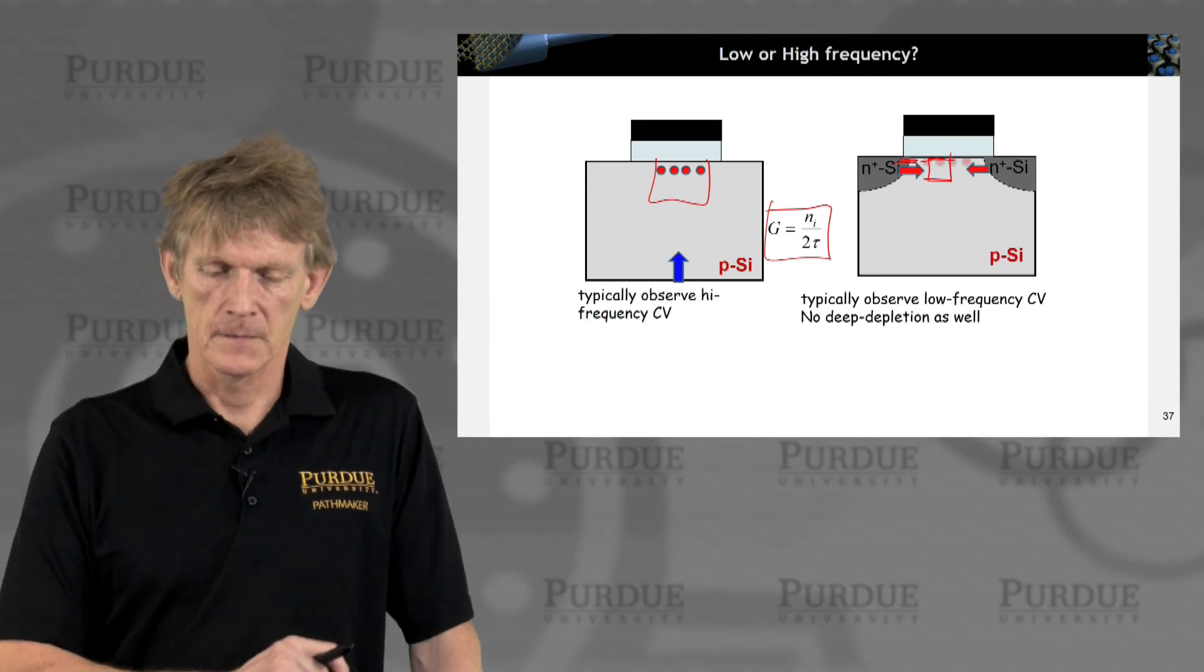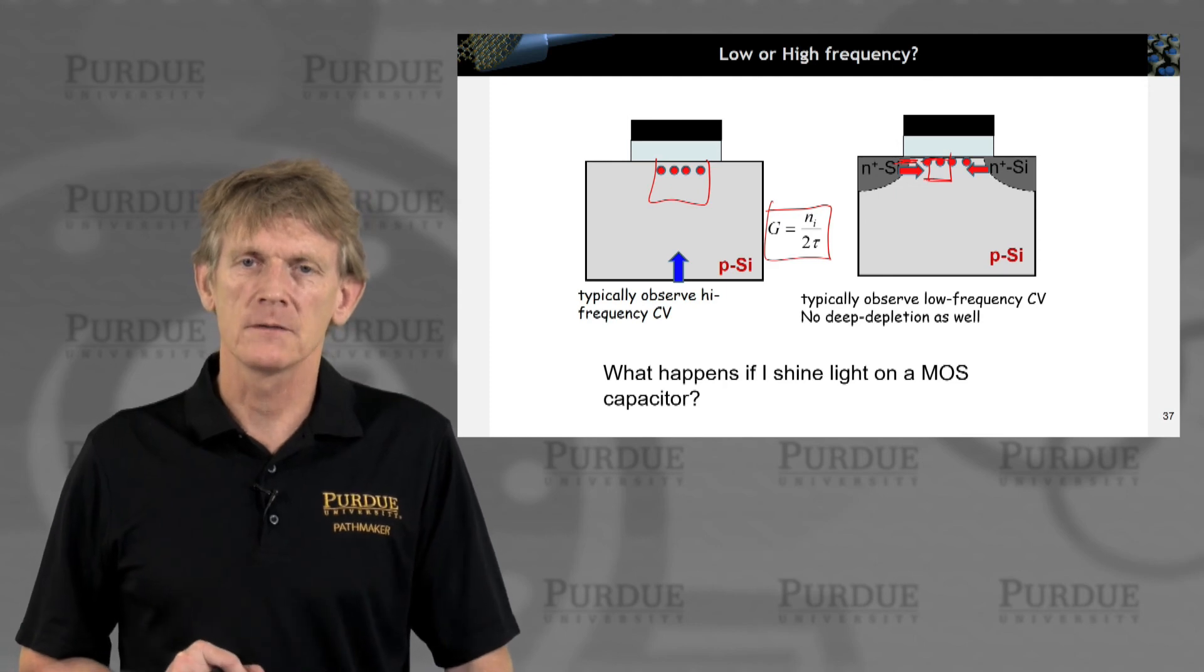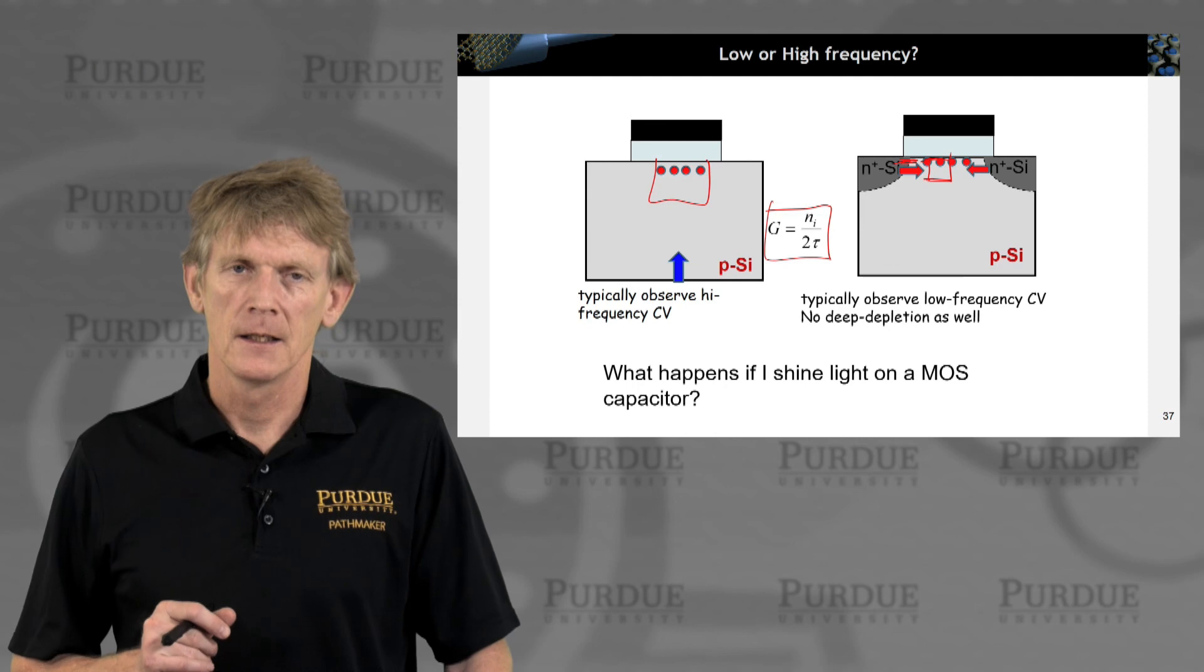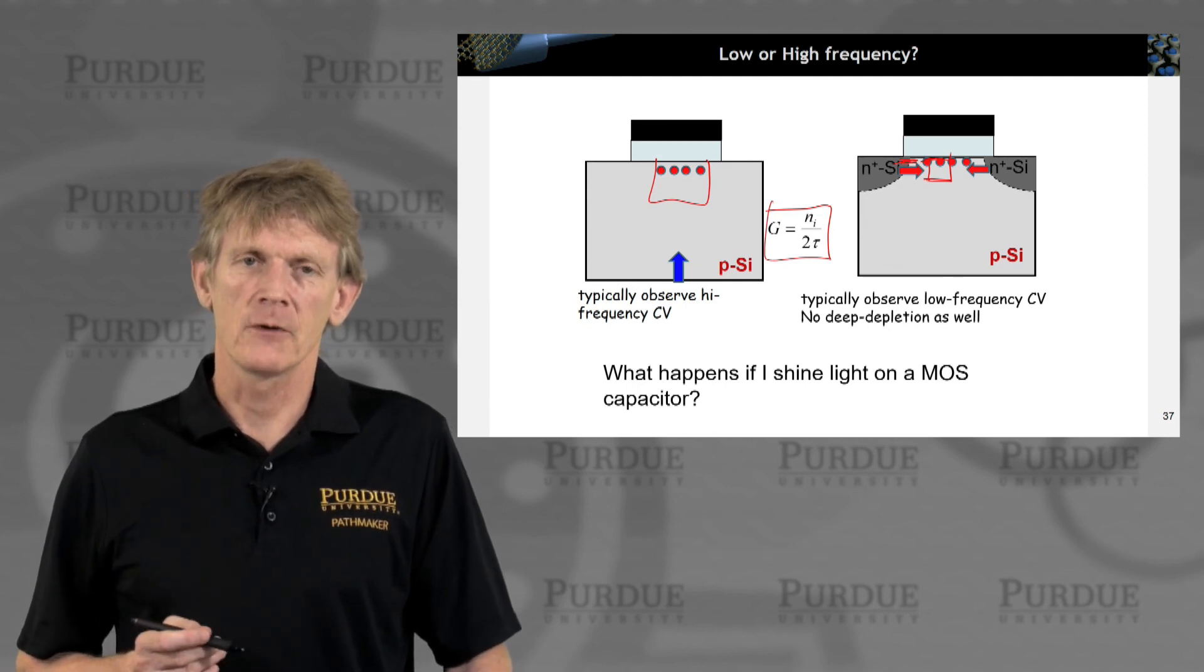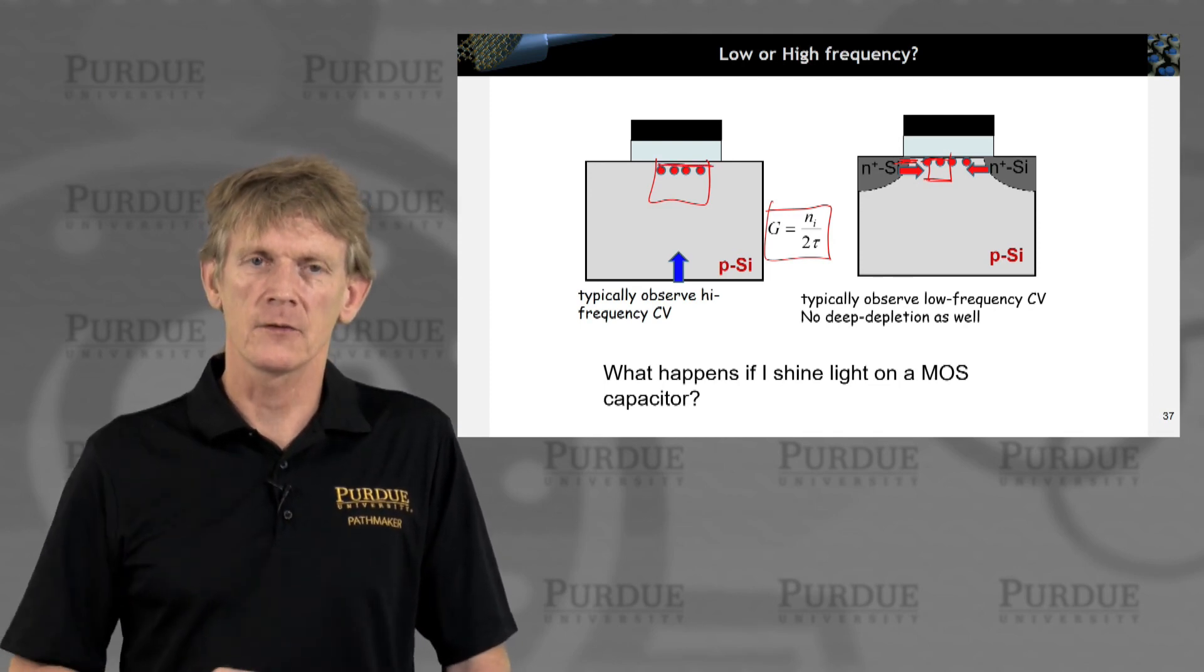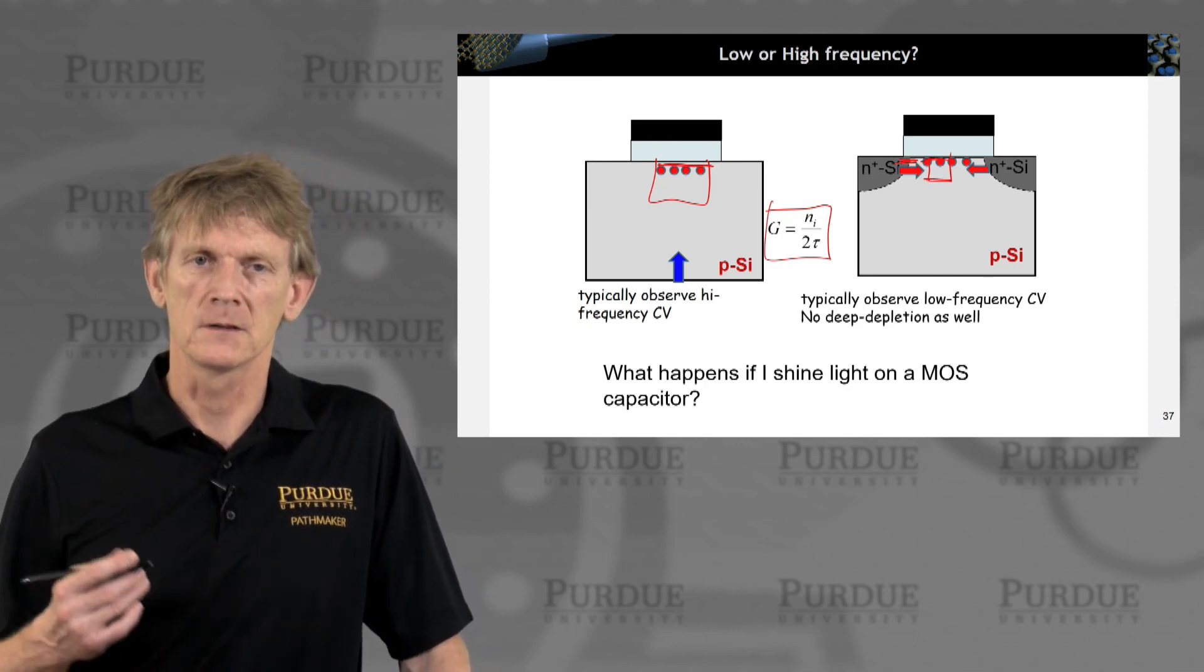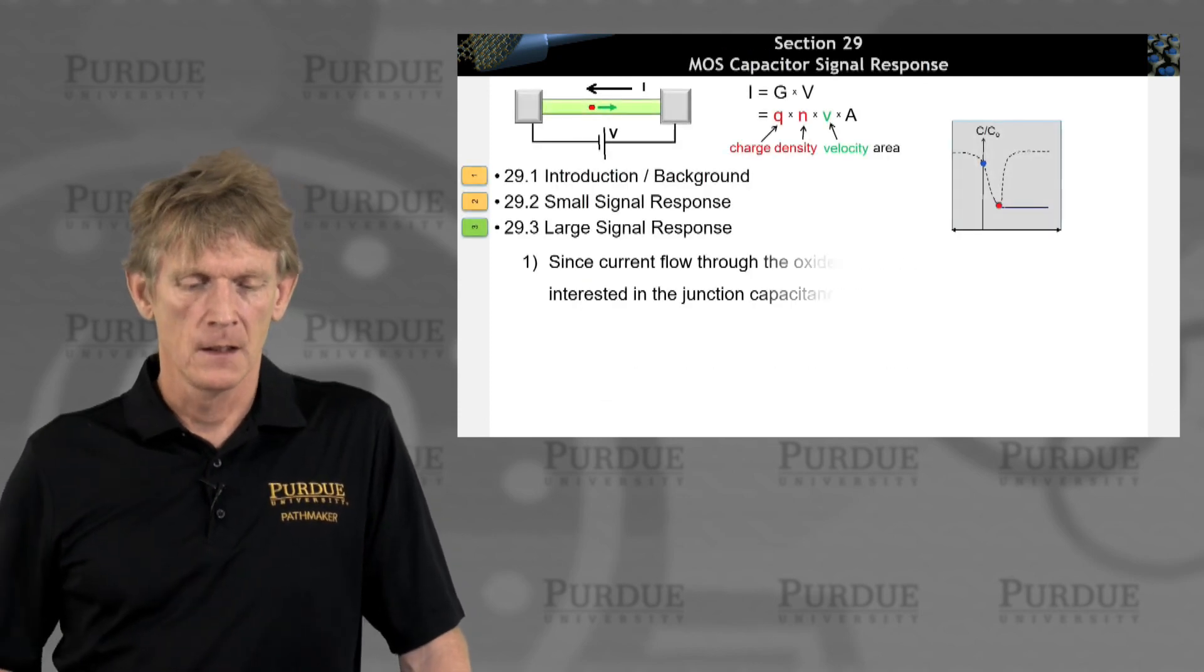All right. So, oh, quick question here. What happens if you shine light on an MOS capacitor? You generate carriers at a rate much more rapid than the generation piece, and they will float where? They float closer to the oxide interface, and therefore you reduce the capacitance. So your capacitance measurement should change.